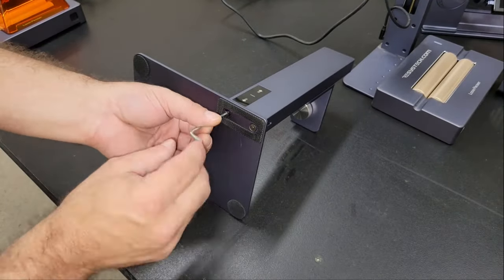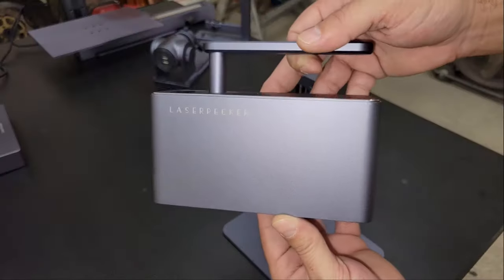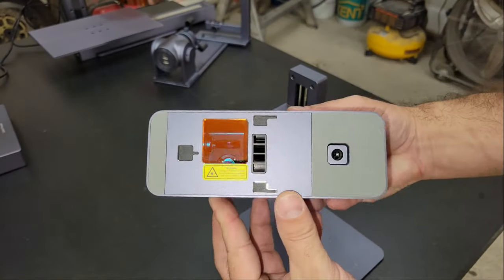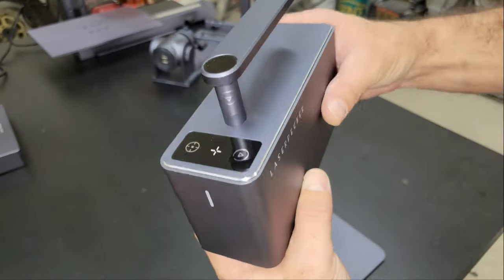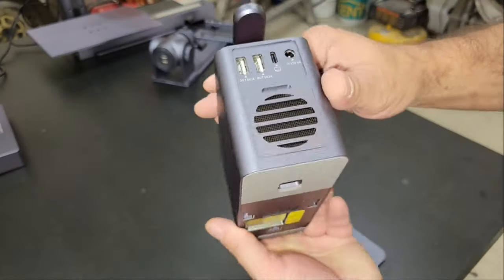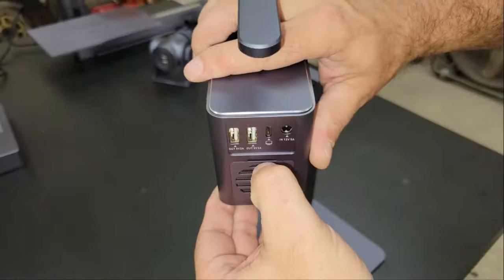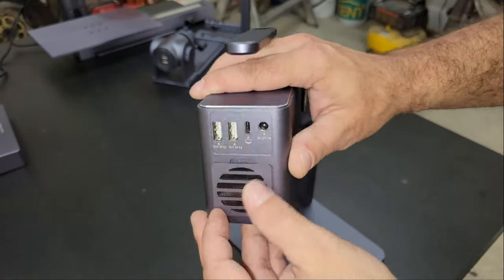The stand attaches to the base plate with a couple of screws and the module is secured to the bracket using the thumb screw. As I mentioned, the module uses a 5 watt blue diode laser which can engrave a variety of materials from wood and paper and leather to black acrylic, anodized aluminum, and stainless steel.